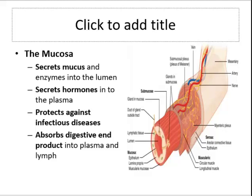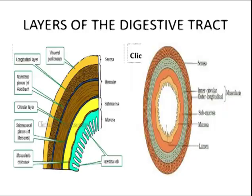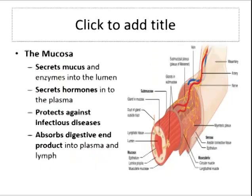The mucosa also functions in absorption of digestive end products into plasma and lymph. The mucosa contains three sub-layers: the epithelium, lamina propria, and muscularis mucosa. The epithelium lines the lumen and is simple columnar in the intestines and stomach, and stratified squamous in the oesophagus and anal canal.